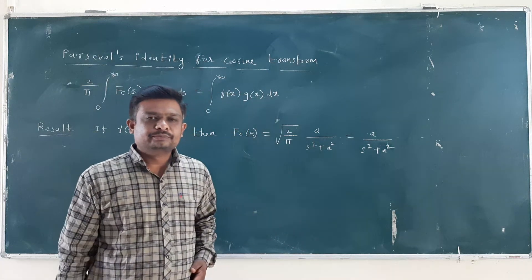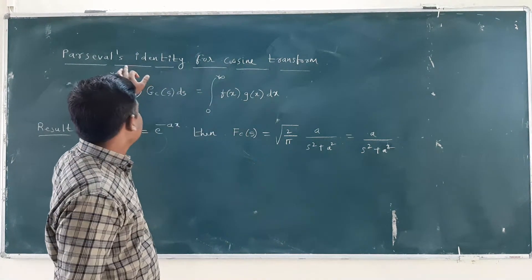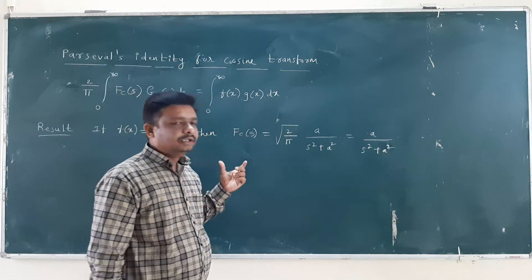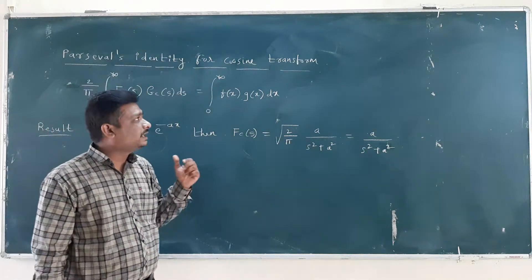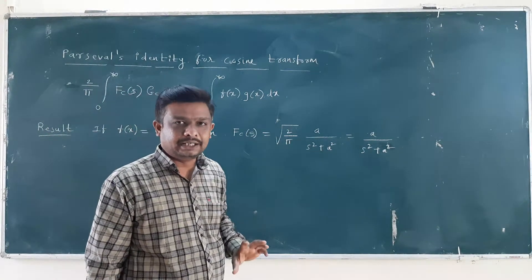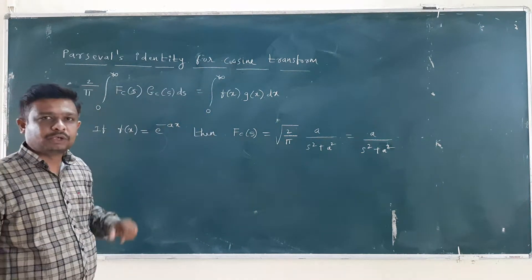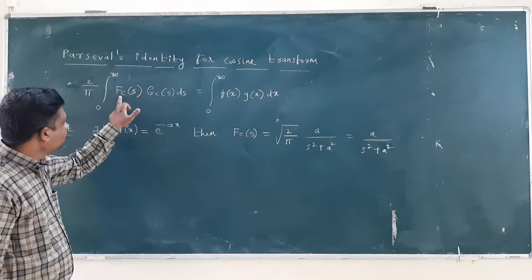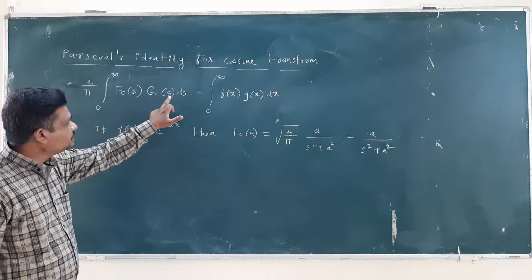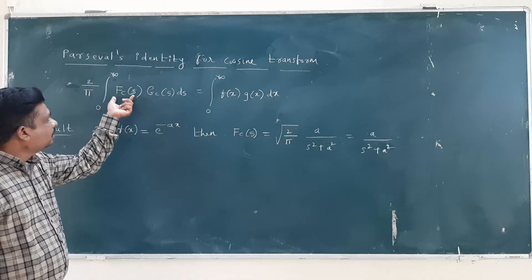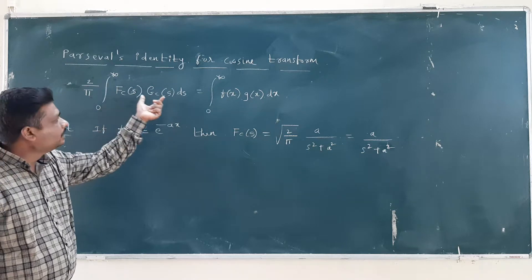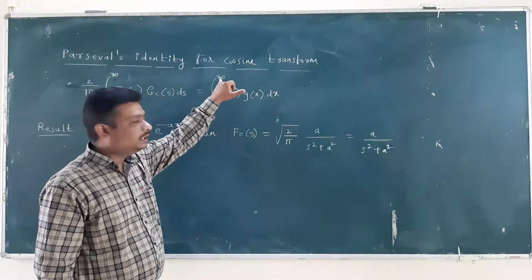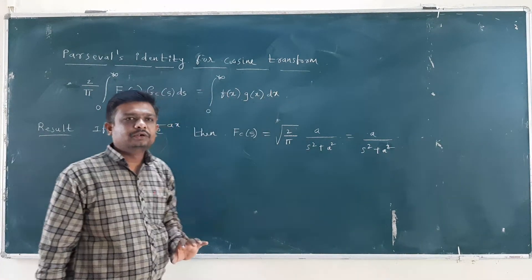Today in this video, I am going to discuss about Parseval's identity for the Fourier cosine transform. By using this Parseval's identity, I am going to solve some different integrals. First you will see the formula. The formula is: 2 upon pi, integration 0 to infinity, Fc(s) into Gc(s) ds, where Fc(s) is the Fourier cosine transform, and this equals integration 0 to infinity f(x) g(x) dx.